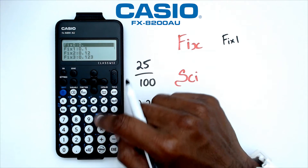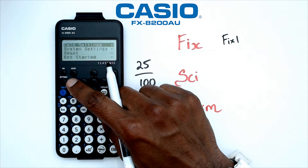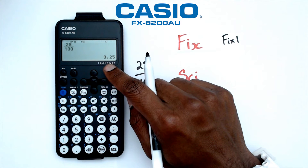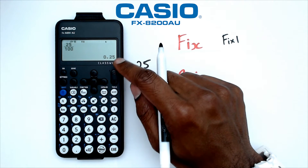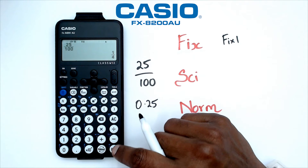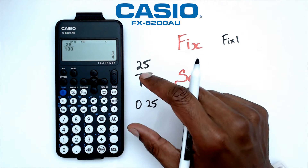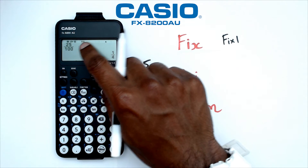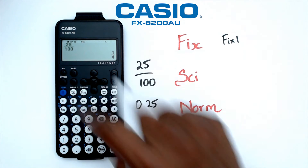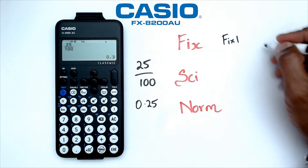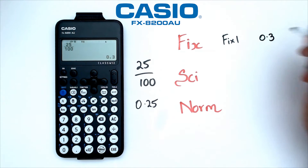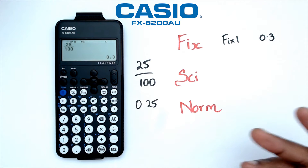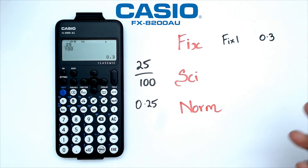We're going to put it in there, then let's go back. Right now it says 25 over 100 is 0.25. But if I click EXE again, it's going to convert it back to a fraction, which is a quarter. But because we're now in fixed mode, if I go shift EXE, it actually puts it as 0.3 — we know it's theoretically not correct, but it's rounded up to one decimal place.